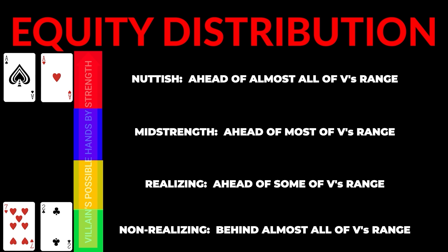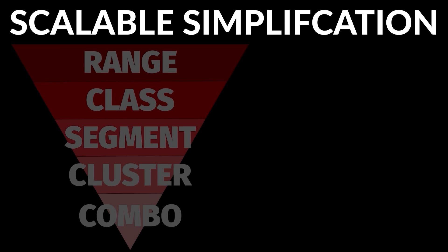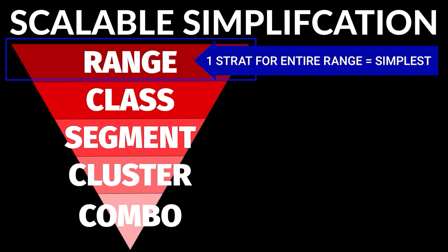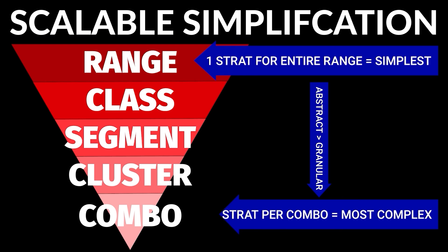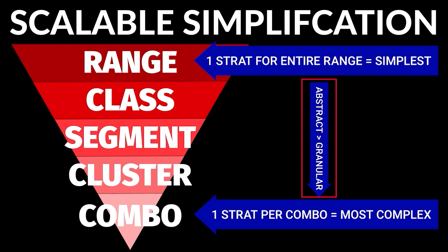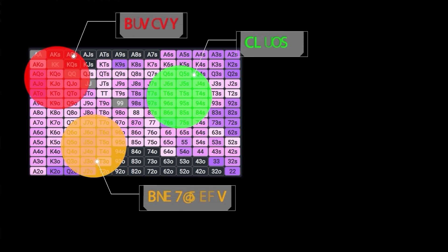Now that we've established how to allocate our specific hand to a broad class based on its strength, what do we do with this information? As we covered extensively in the last video, we can greatly simplify this very complicated game when we're able to devise overarching strategies for groups of hands instead of attempting to devise unique strategies for individual combos. The benefit of classifying hands based on their strength is that hands of similar strength tend to share common incentives.